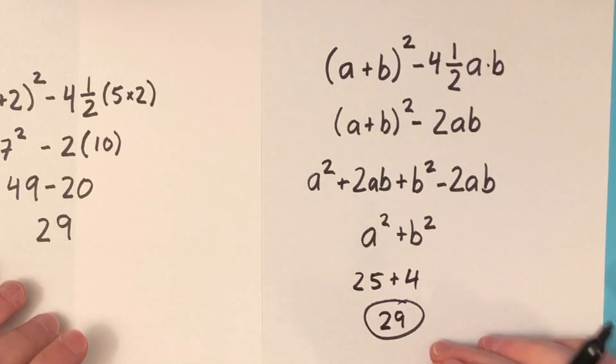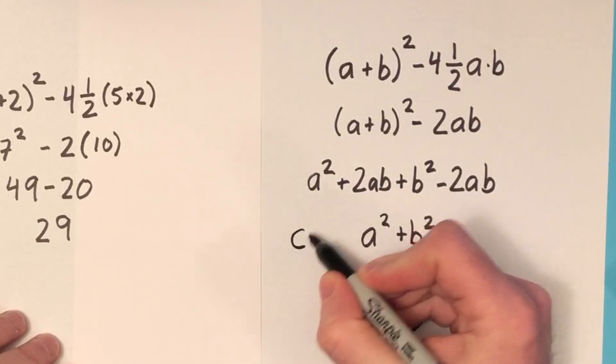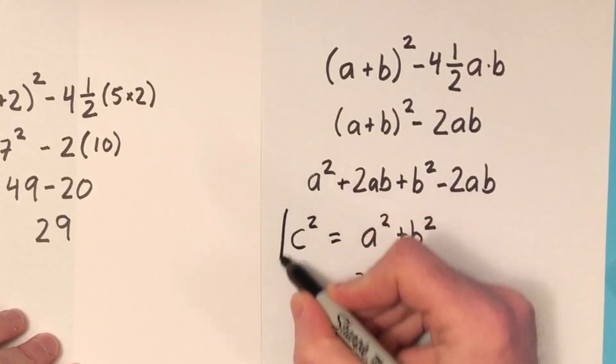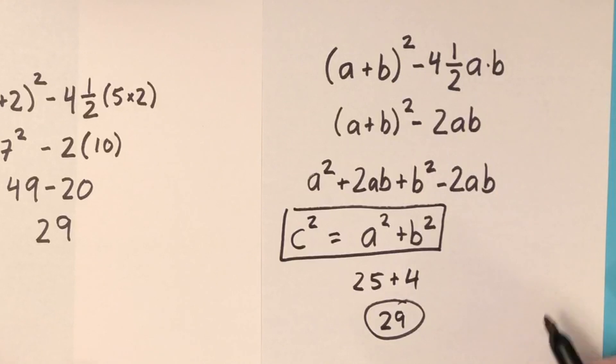So what students have done through this is they've discovered that the square that's built on the hypotenuse of that right triangle is equal to the sums of the squares that are built on the two legs. They've discovered the Pythagorean Theorem.